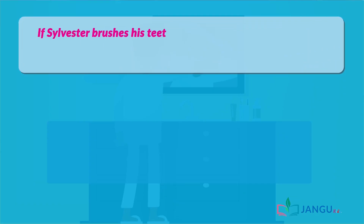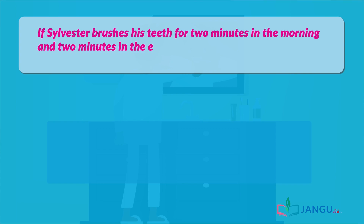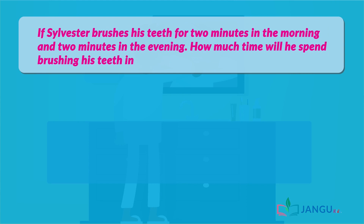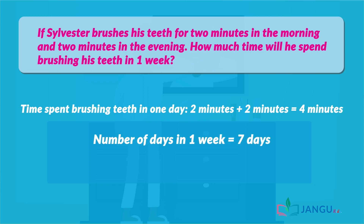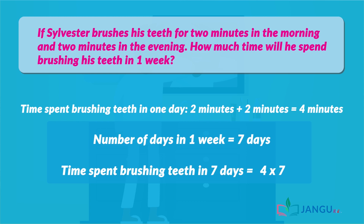If Sylvester brushes his teeth for 2 minutes in the morning and 2 minutes in the evening, how much time will he have spent brushing his teeth in one week? Sylvester spends 4 minutes brushing his teeth every day. Since there are 7 days in a week, we multiply 4 minutes by 7, which gives 28 minutes. Therefore, Sylvester spends 28 minutes brushing his teeth in one week.